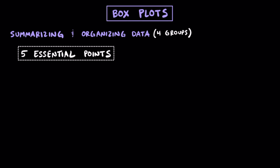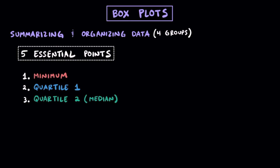To do so, we're going to need five essential points. First we need the minimum or least value, then we need quartile 1, also known as the lower quartile or the median of the lower half. Following, we need quartile 2 or the median of the data set. After that we're going to need quartile 3, which is also known as the upper quartile or the median of the upper half of the data. And then finally we need the maximum or the greatest value of the data set.